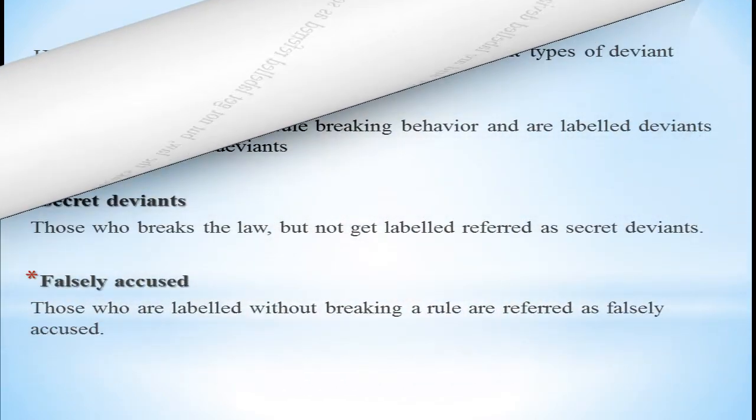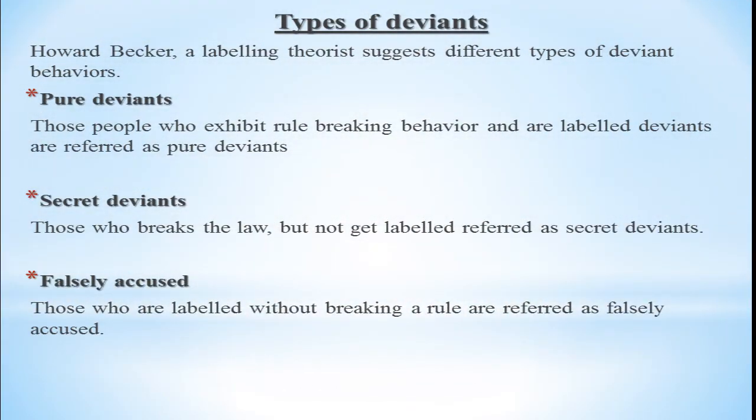The third type is falsely accused. Those who are labelled without actually breaking a rule are referred to as falsely accused. These are people who get labelled as deviant but have not committed any wrong — due to their association or surroundings, they get labelled.